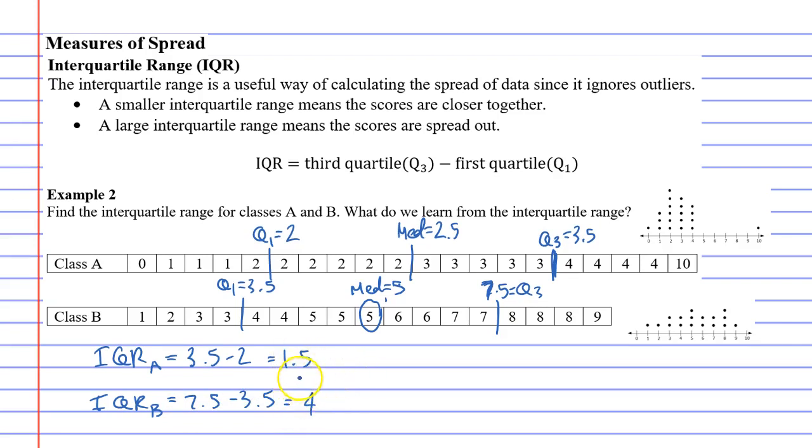Now, what you'll notice is that class B has a higher interquartile range. And as we mentioned in the last video, a higher range means more spread out, and a lower range means grouped close together, which is perfect because we want class A.